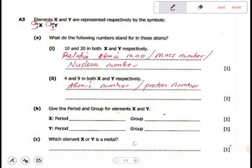Now give the period and the group for element X and Y. For us to know the period and also to know the group, we first have to write the electronic configuration of X and Y. So let's first write for X and for Y here.